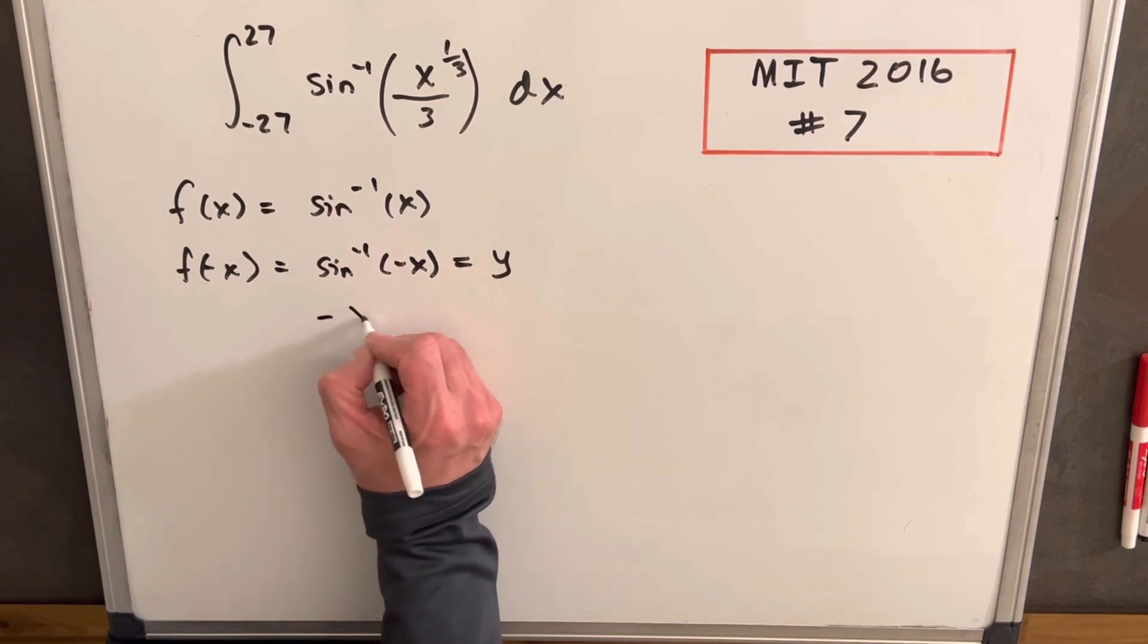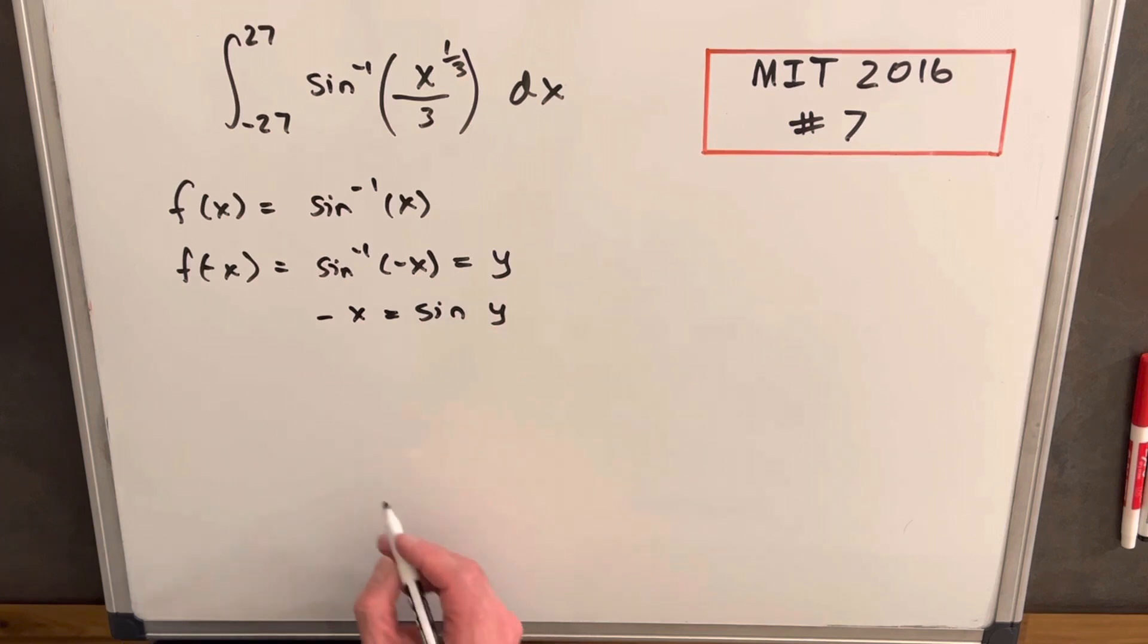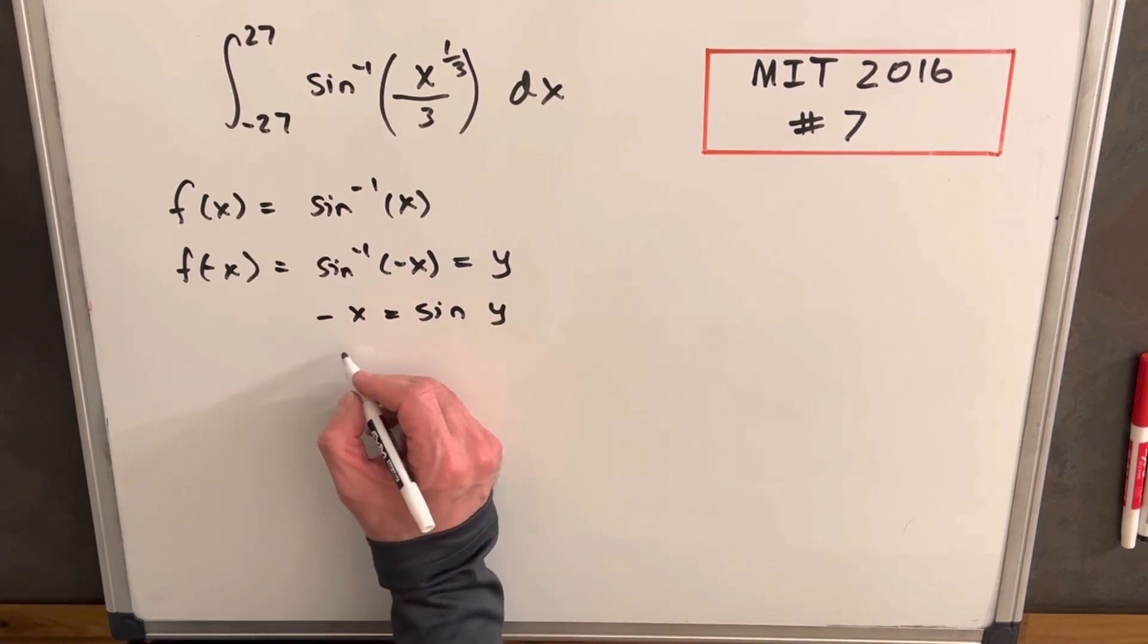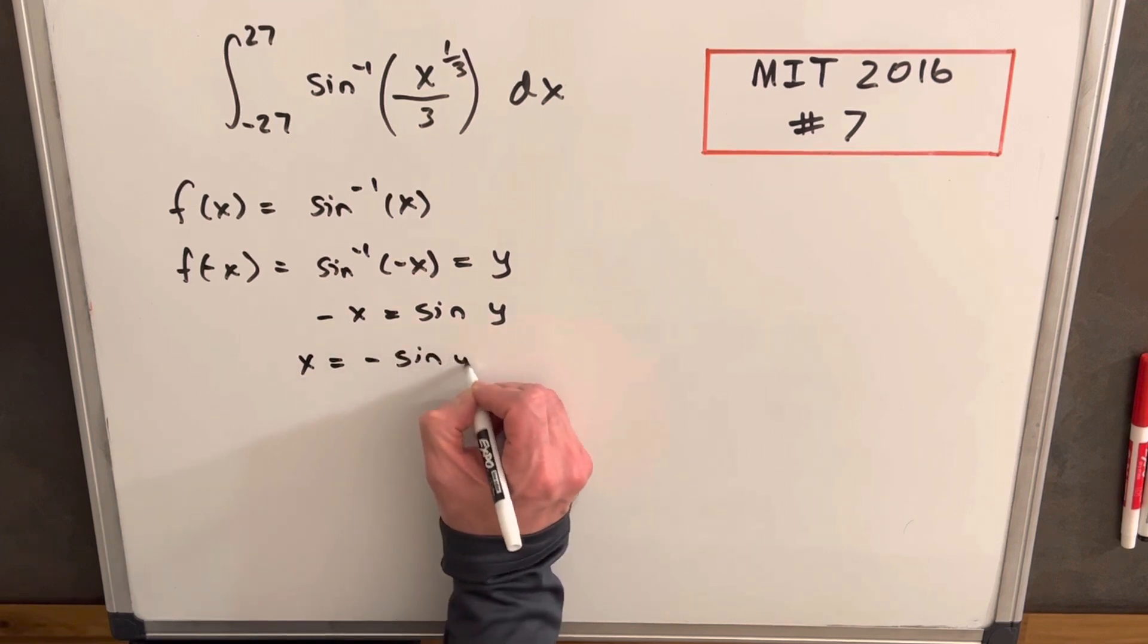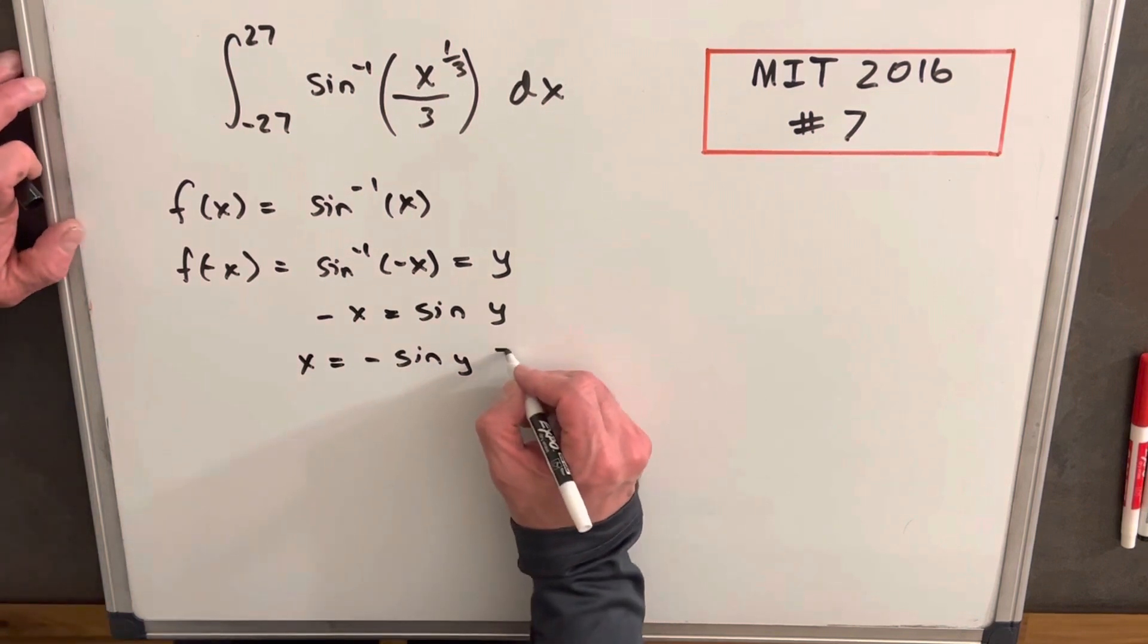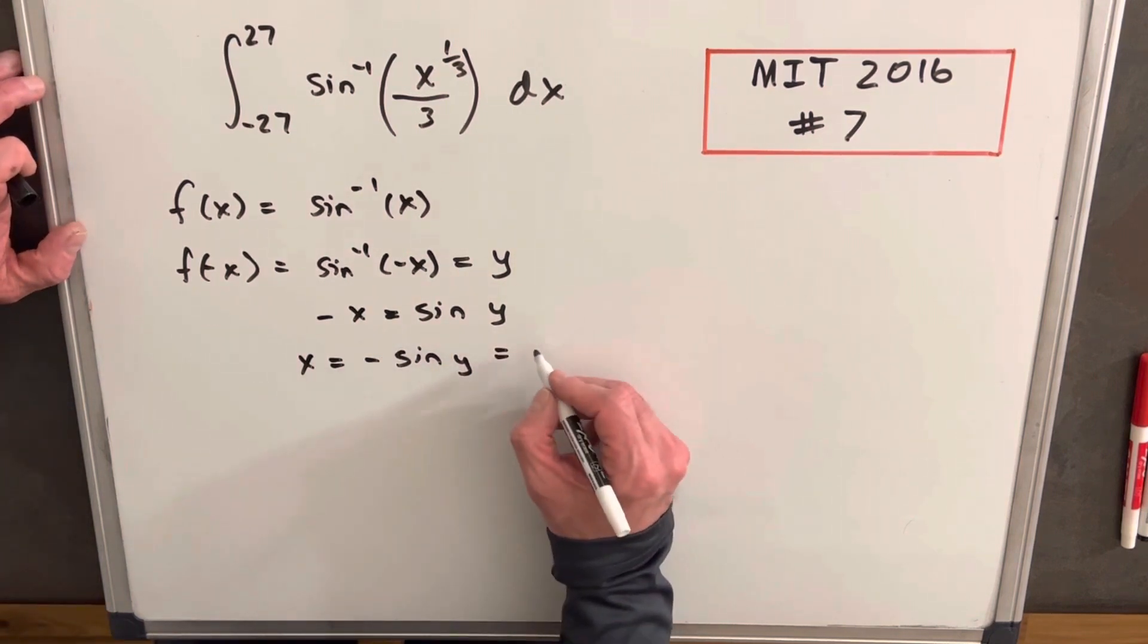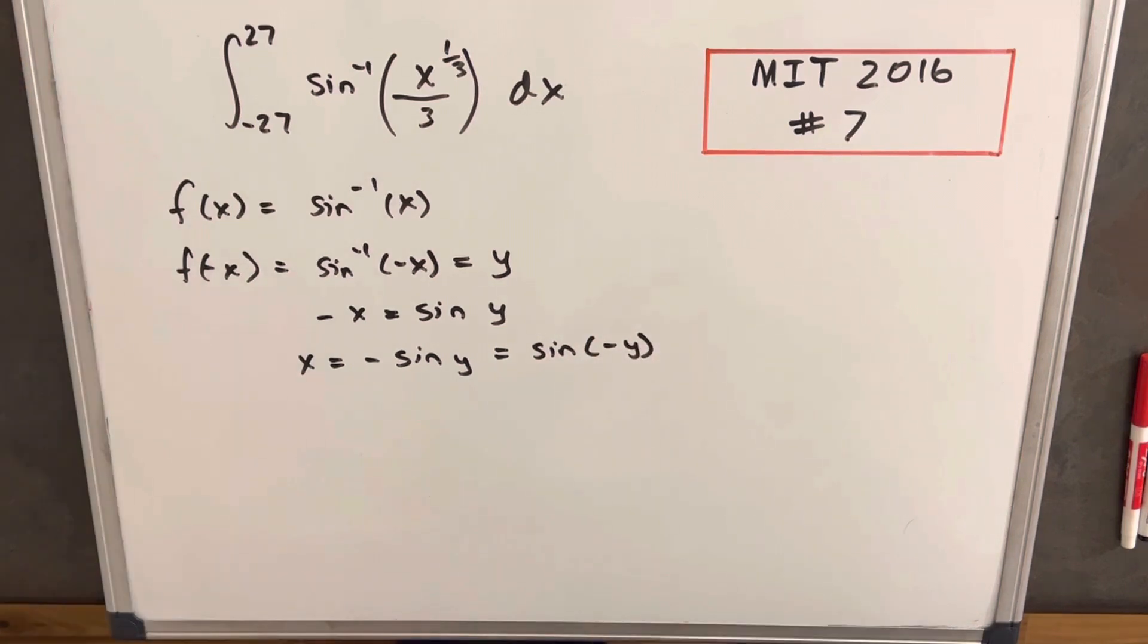And then we can just use the property of the inverse and we can say that minus x equals sine of y. But then we can multiply minus 1 on both sides and we're going to have x equals minus sine y.